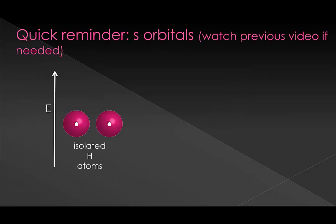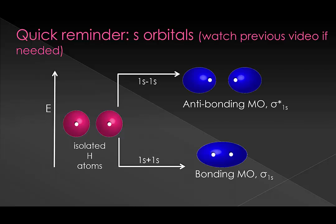One more quick review from last time. You can always go back to the other video if you need more detail since this is a fast review version. We started by combining s orbitals since these are the simplest to see. When we combine two atomic orbitals constructively, we get a lower energy orbital with electron density mostly between the nuclei — this is called a bonding orbital. If we interfere them destructively, we end up with an orbital where most of the electron density is outside the area between the two nuclei, and we call this an anti-bonding orbital. They were both named sigma because they were symmetrical along the bond axis, and we added a subscript that told us they came from the 1s orbital.